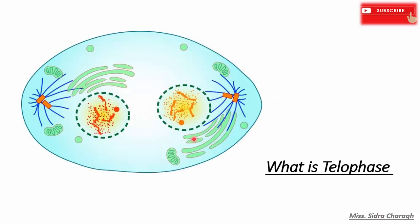What is telophase? Telophase is the fourth step of nuclear division following the anaphase step, and therefore it is the final step of karyokinesis. In mitosis, anaphase pulls apart the chromosomes into the opposite poles of the cell with respect to the equatorial plate, due to the tension generated by the spindle apparatus.